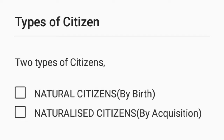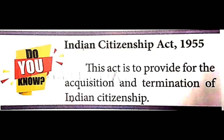There are two types of citizens: natural citizens and naturalized citizens. Natural citizens are citizens by birth. Naturalized citizens are those who acquire citizenship. The Indian Citizenship Act 1955 gives the provisions for the acquisition and termination of Indian citizenship.